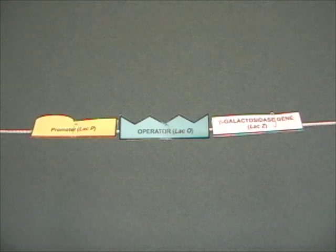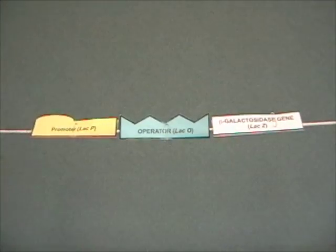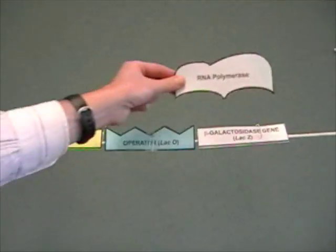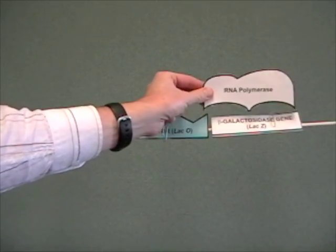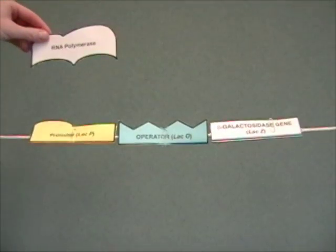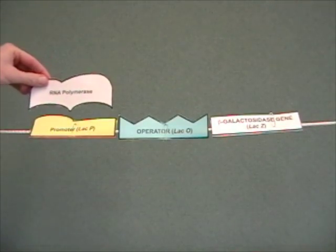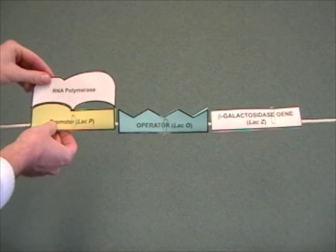We're going to imagine what happens in a wild-type cell. To get expression of the beta-galactosidase gene, the enzyme RNA polymerase has to be able to bind onto the DNA and position itself here at the start of the beta-galactosidase gene to get expression. The interaction of RNA polymerase with the DNA begins here at this sequence called the promoter, and you can see the shapes are designed to emphasize that RNA polymerase and the promoter can interact.